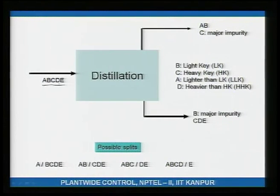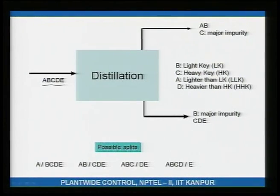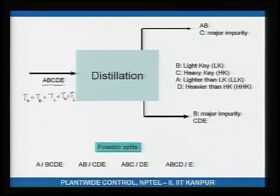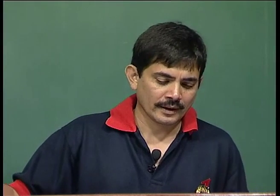When we distill A, B, C, D, E, the boiling temperatures satisfy T_A < T_B < T_C < T_D < T_E. By convention, A is always the lightest component and whatever is last will be the heaviest, with B, C, D, E in decreasing order of volatility.